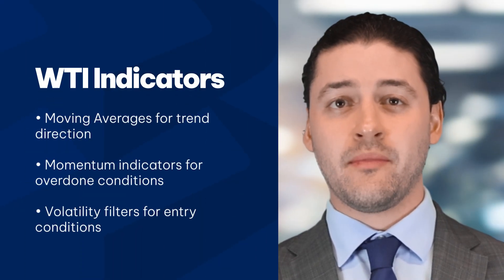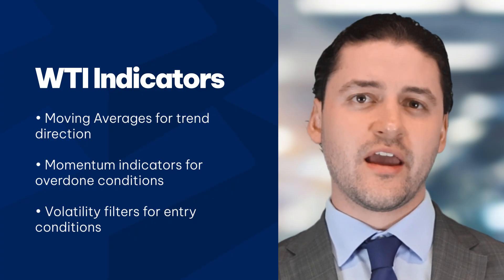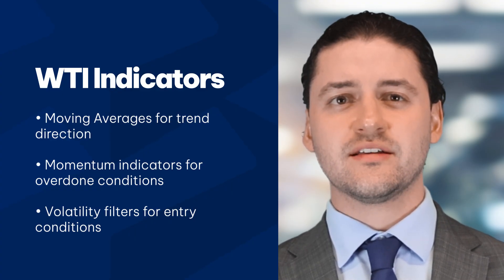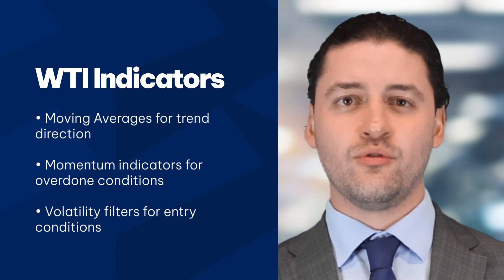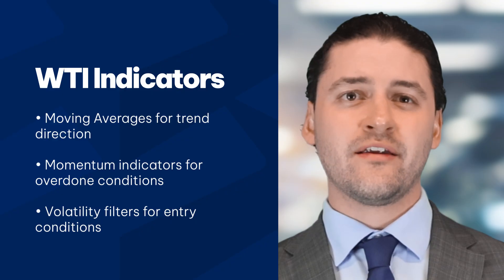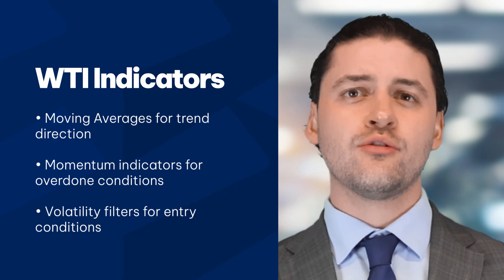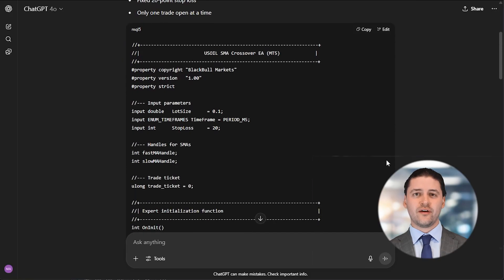You can use any technical indicator in your EA that you like. For crude oil trading, a few tools tend to be more popular. Moving averages like the SMA or EMA are commonly used to track trend direction and spot crossovers for entry signals. Momentum indicators such as the Relative Strength Index can help identify overbought or oversold conditions, which can be useful during volatile moves. If you're trading around major releases like inventory data, consider adding volatility filters such as Bollinger Bands. The AI will reply with a block of MQL5 code — copy that entire block to your clipboard.